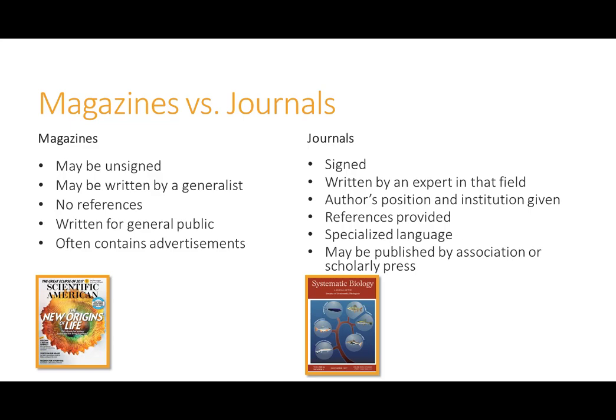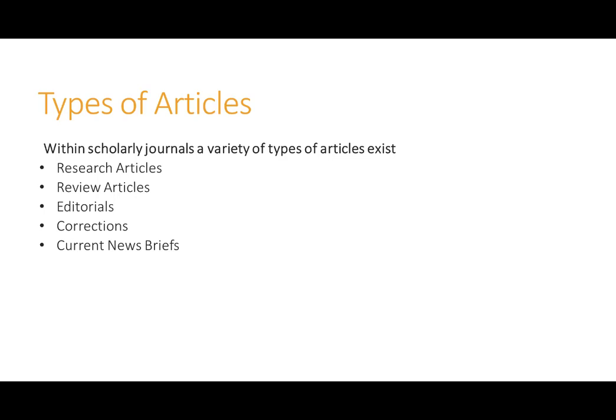Journals are also written by an expert in their field and include the author's name and the institution the author is from. At the end of a journal article, there is a list of references of where the information came from. Just like a magazine, scholarly journals include a variety of articles that include research articles, review articles, editorials, corrections, and current news briefs. We are going to look more into the difference between a research article and a review article.